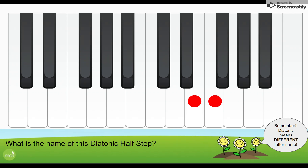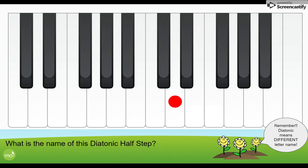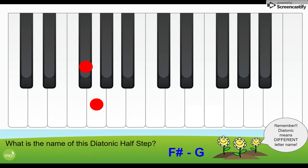How about this next one — we're starting on a black key and going to a white key. Remember, they have to have a different name, so I'm going to start on C sharp and go to D natural. Again with a different name, we're starting on D and going up to E flat — it has to be E flat and not D sharp because they are diatonic; we're looking for a different name. Now we're starting on this black key and going to this white key, so that has to be F sharp to G natural. And that's all for our half steps for today — next time we will look at some whole steps together.